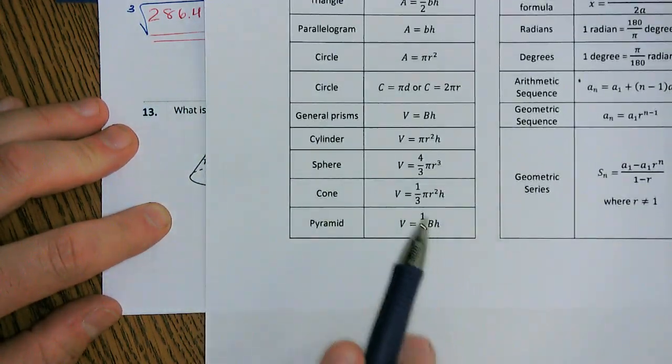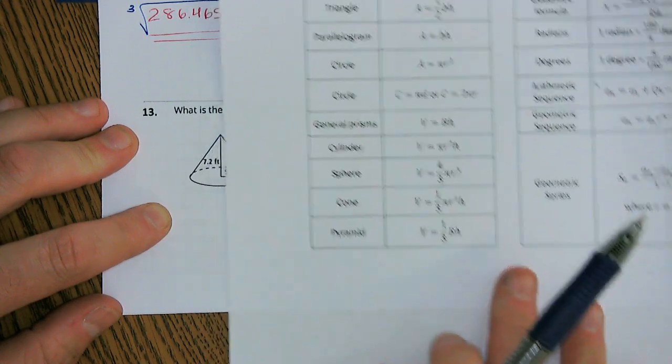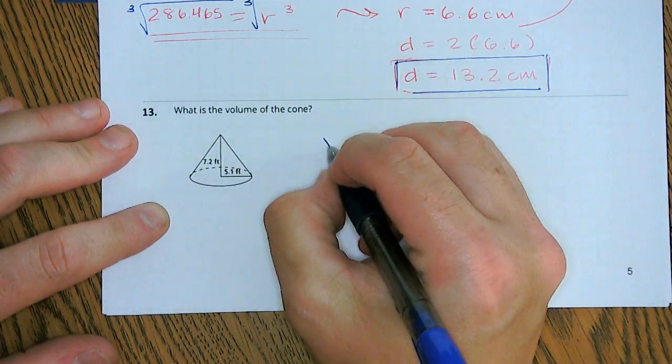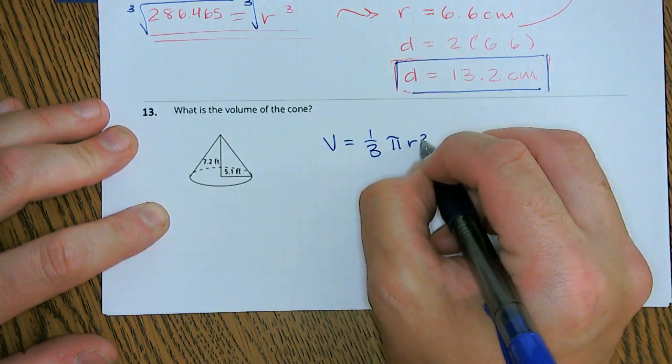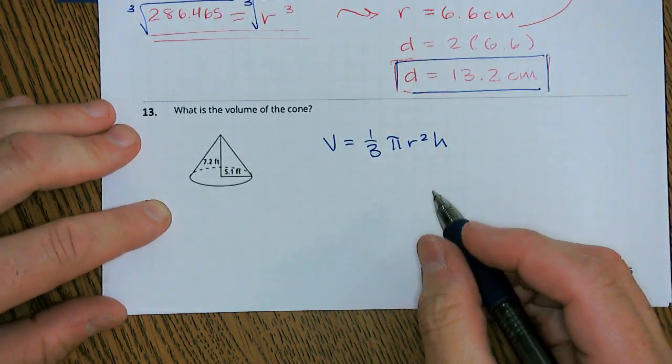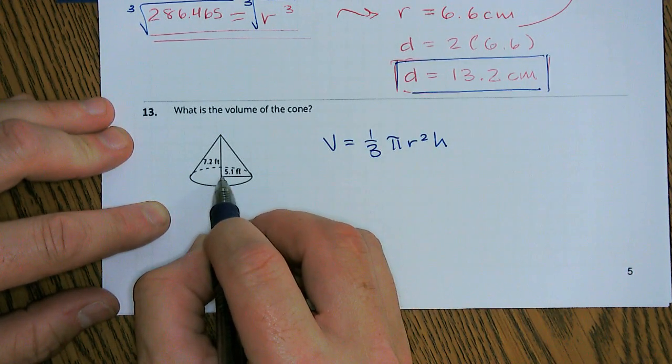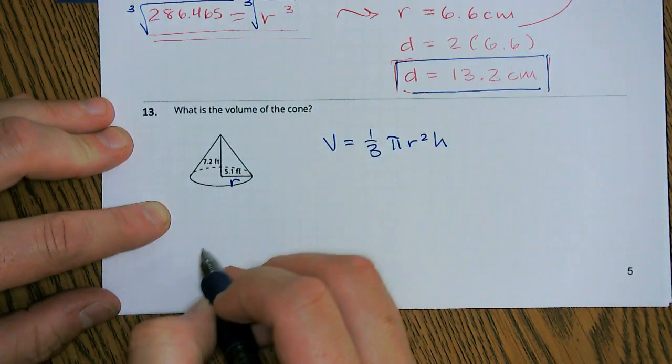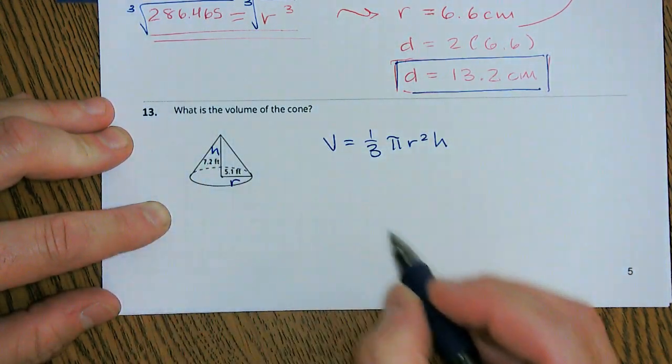All right. What's our volume of a cone? Well, from our formula sheet, the volume of a cone is one-third pi r squared h. So our volume is one-third pi r squared h. So let's plug in what we know. Well, we can see that our radius is from the center to the edge. So that's the 5.1. That's our radius. Our height is the 7.2. That's our height.